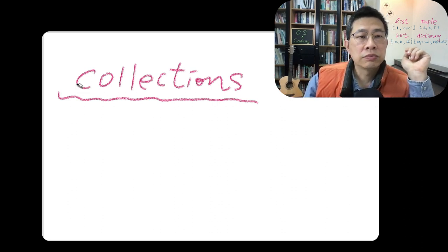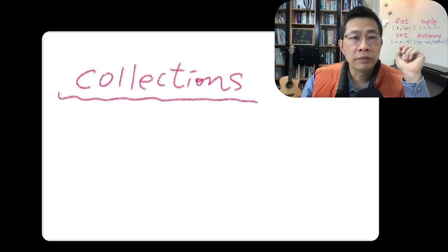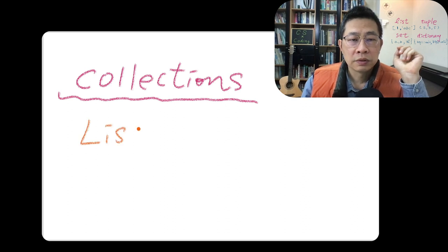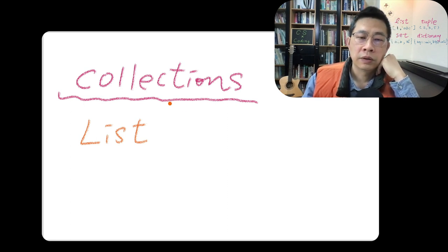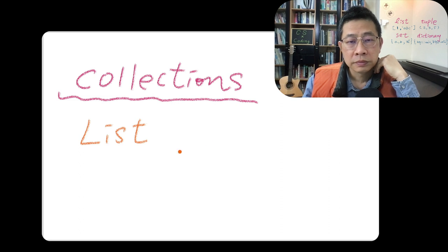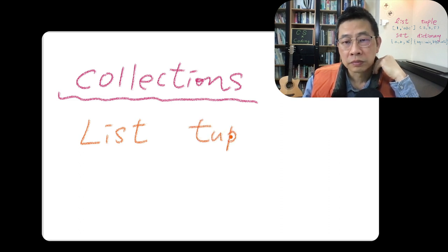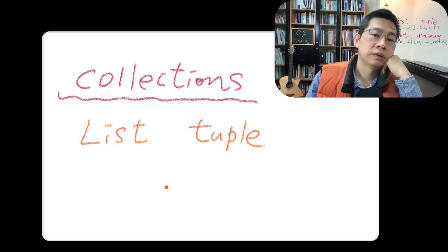So what are these four things? The first one would be, we call it a list. And there's another type we call the tuple.